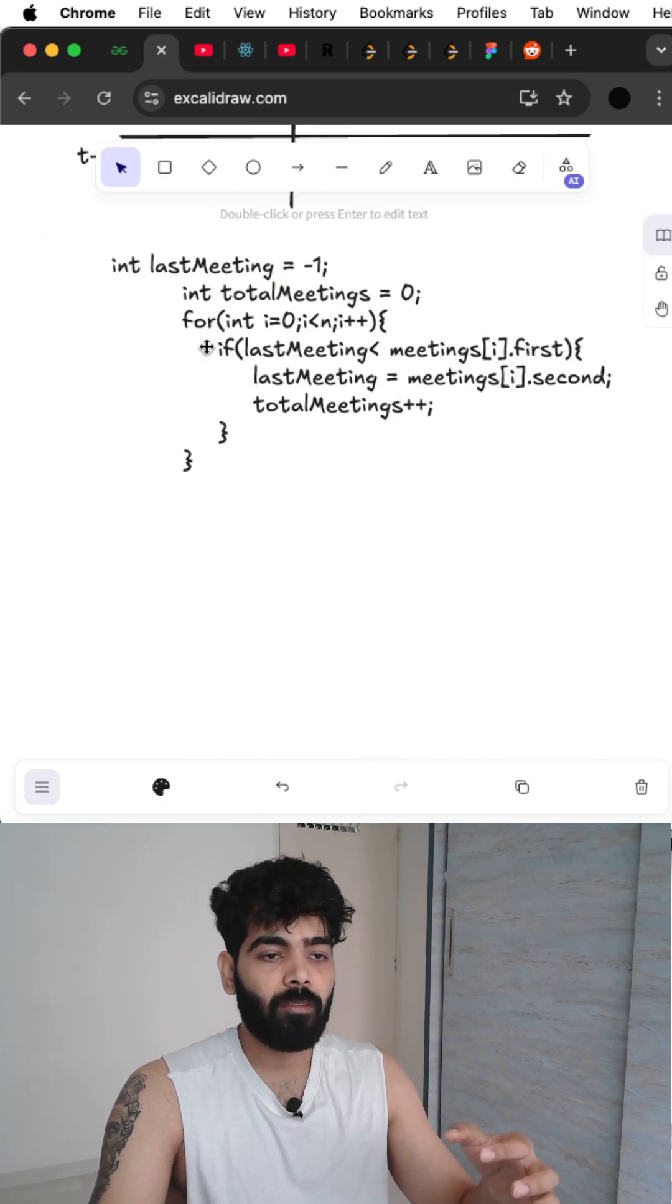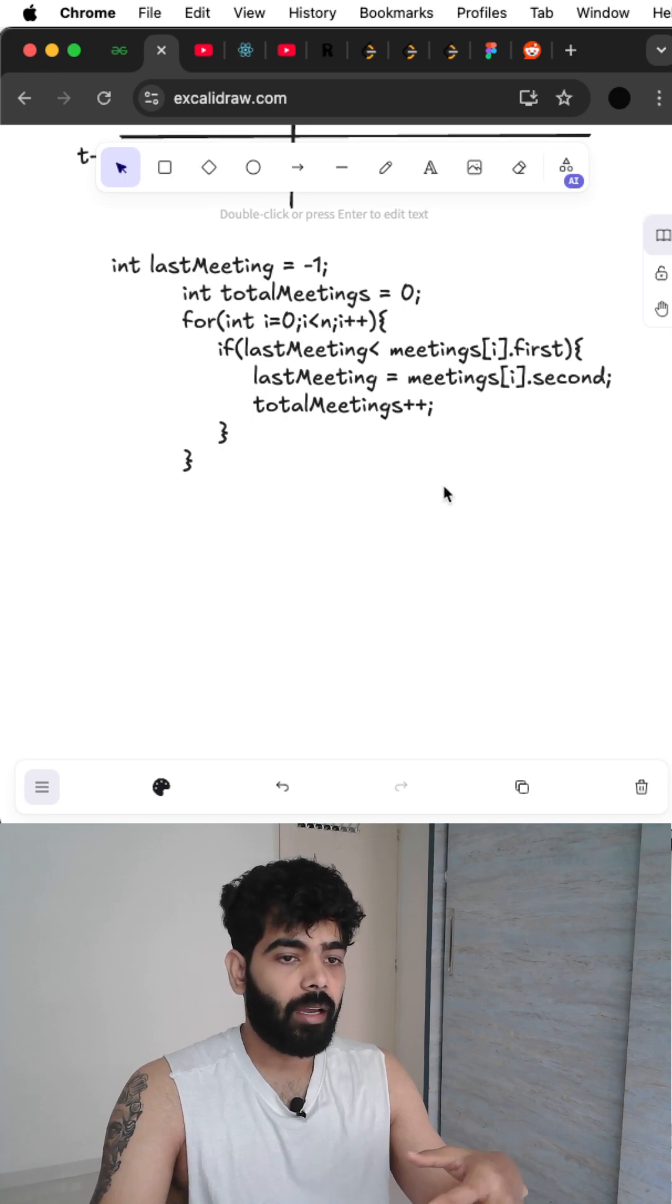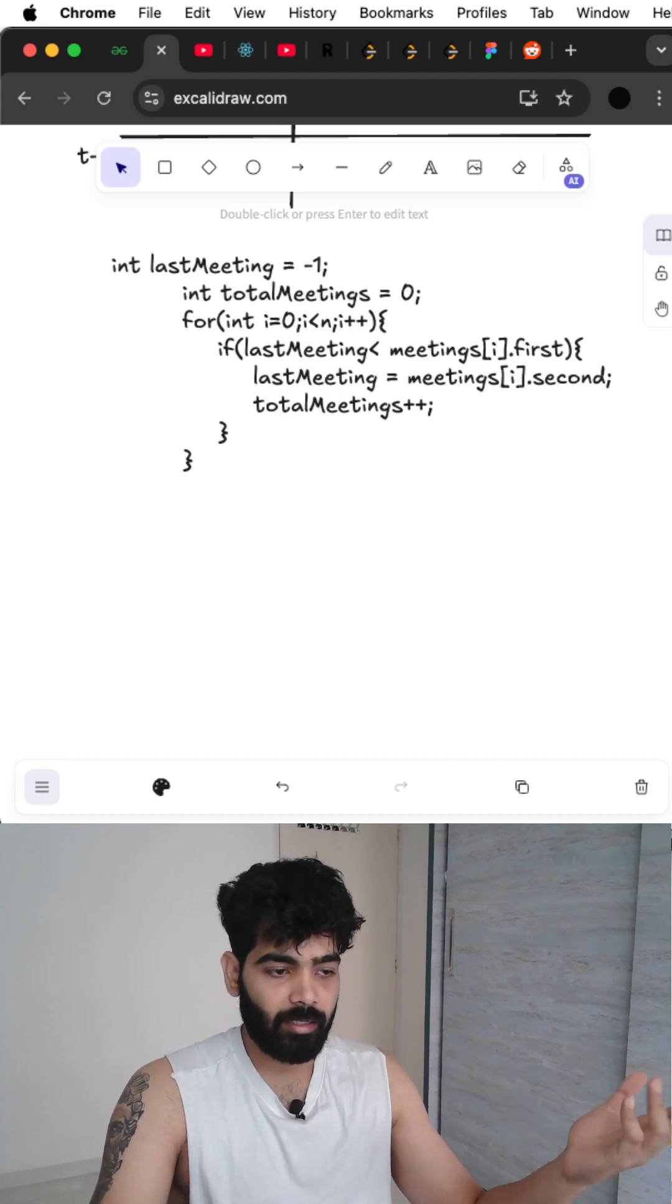So for that we have this loop which is going from zero to n, and then if the current meeting or the last meeting is ending before the next meeting is starting, we can include that meeting. That's it.